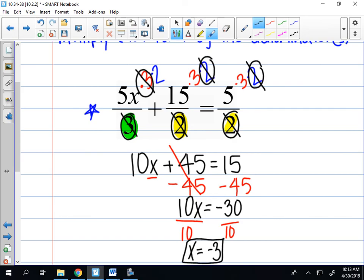And just to show you guys that is in fact the solution, I'm going to plug it back into my original equation and make sure that the left side equals the right side. So my original equation was 5x, so 5 times negative 3 divided by 3 plus 15 divided by 2 should equal 5 divided by 2 if it's a solution.